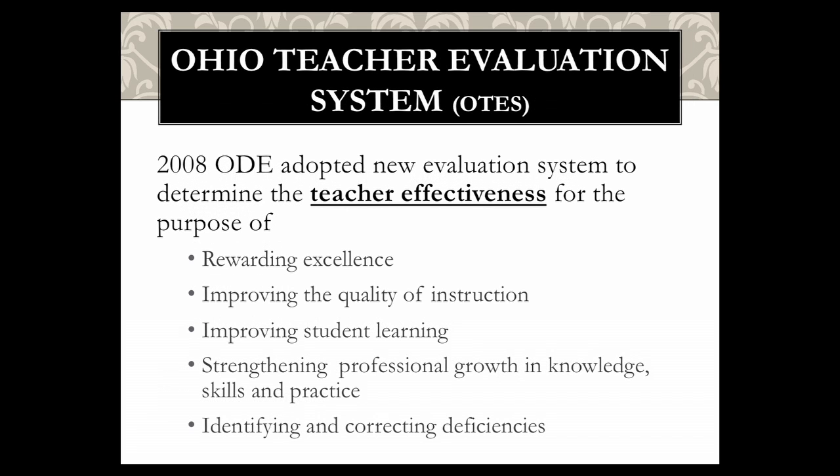During this new Ohio teacher evaluation system, the Department of Education adopted this in 2008, and it was done to make sure that we could determine teacher effectiveness for the purpose of rewarding excellence in our teachers, improving the quality of instruction in our classrooms, improving student learning, strengthening professional growth in the knowledge and skills and practice of their profession, and identifying and correcting some deficiencies.